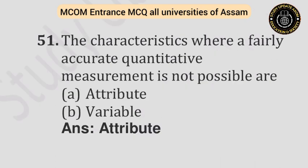The last question: The characteristics where a fairly accurate quantitative measurement is not possible are — Option A: Attribute. Option B: Variable. Answer is attribute. This video covers MCQs of business statistics from B.Com third semester. The link of the previous video is given in the description. If you have benefited from the video, please do like, share, and subscribe to our channel. Thank you very much.